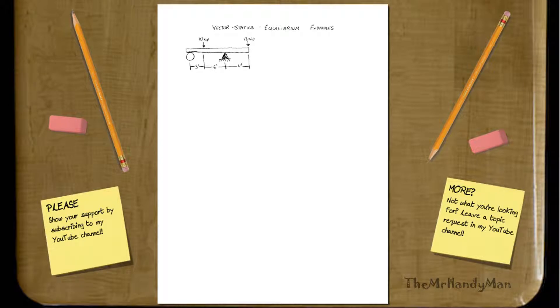Hi there, here's one of the first examples we're going to be doing in the equilibrium section. And the first thing you always do whenever you have a problem is you draw a free body diagram. That's the key.